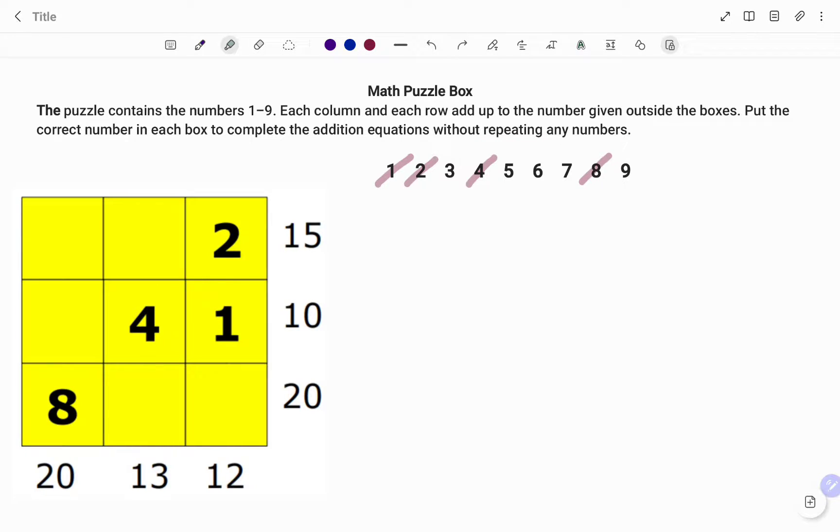To solve the puzzle, we've been told that the numbers in each column or row add up to the number outside the box. So if I add the first row, the value will be 15.